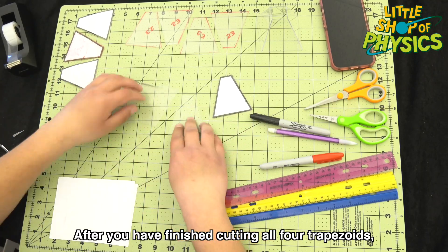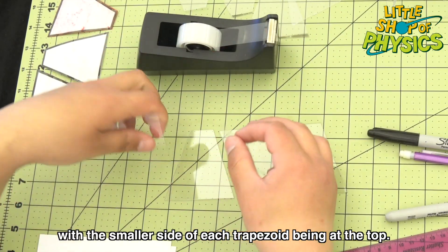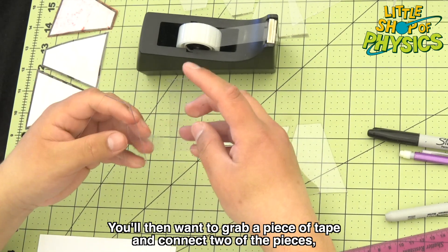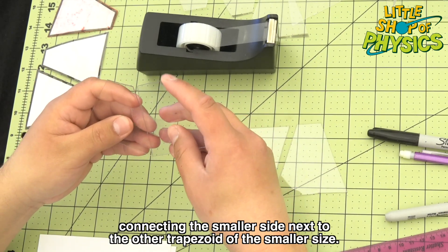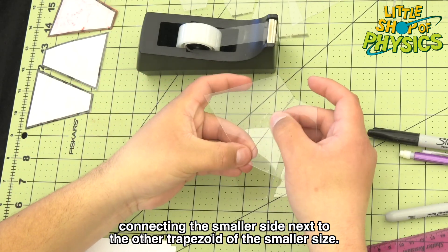you will want to line them up next to each other with the smaller side of each trapezoid being at the top. You'll then want to grab a piece of tape and connect two of the pieces, connecting the smaller side next to the other trapezoid of the smaller size.